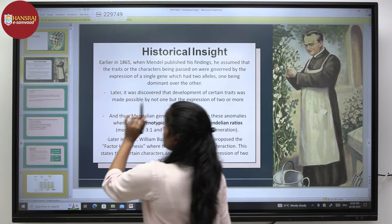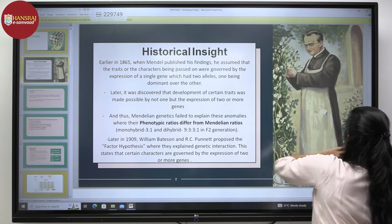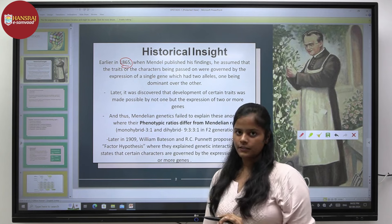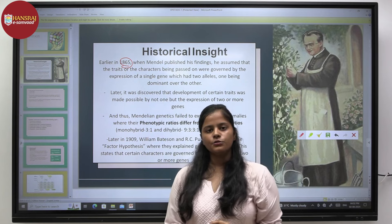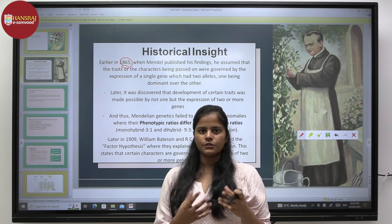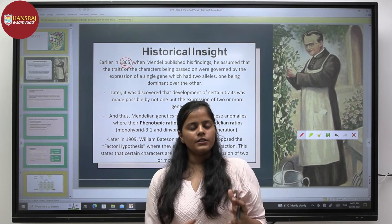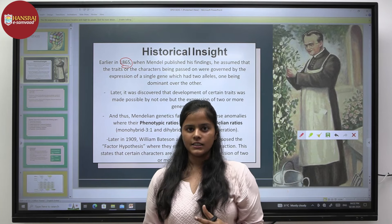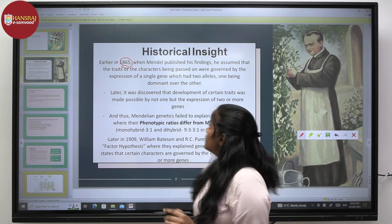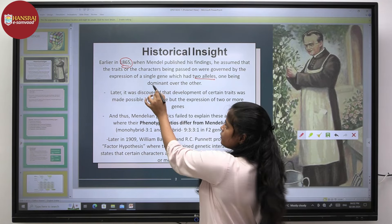Earlier, when Mendel published his findings in 1865, he assumed that the characters or traits being passed on to the next generation were governed by the expression of a single gene which had two alleles, one being dominant over the other.